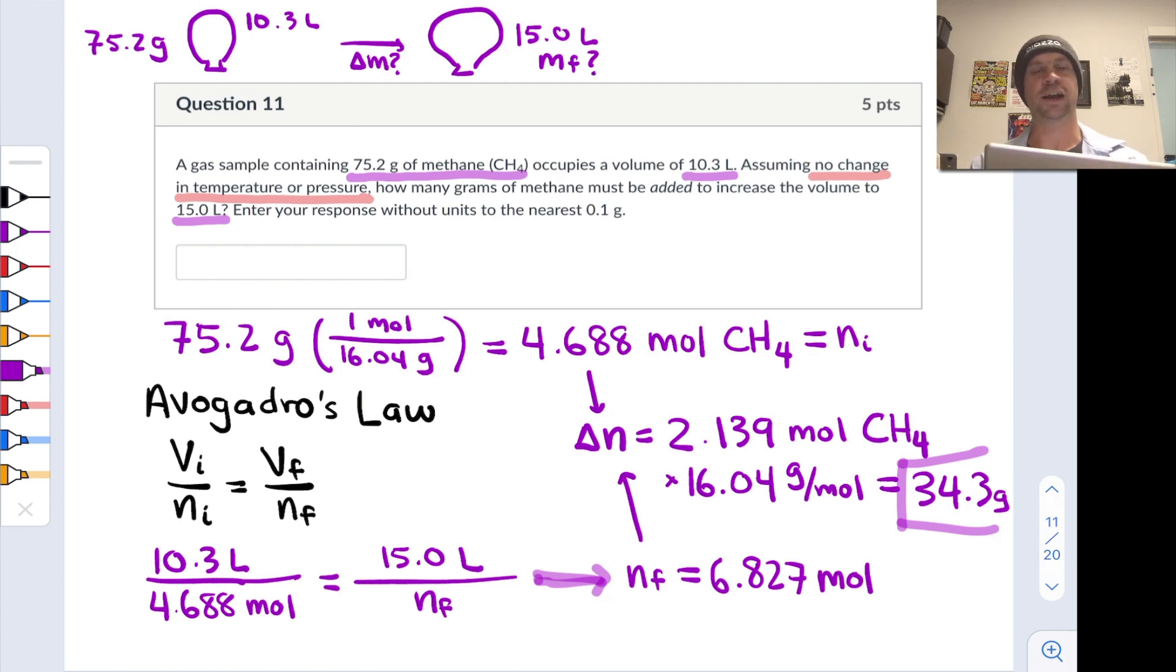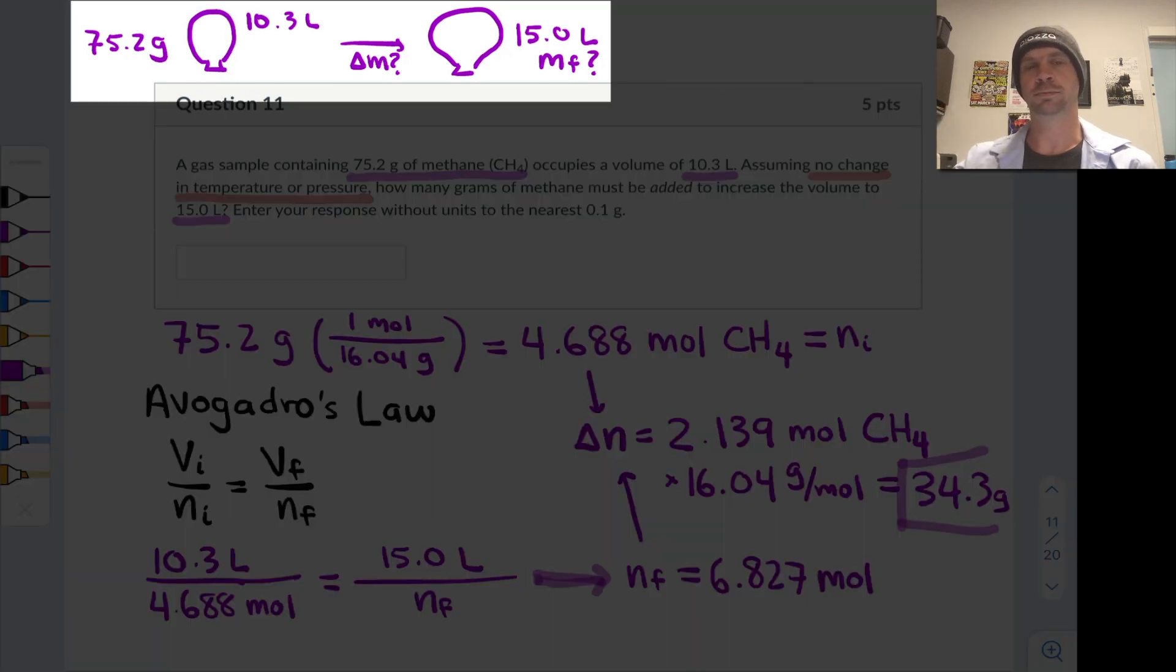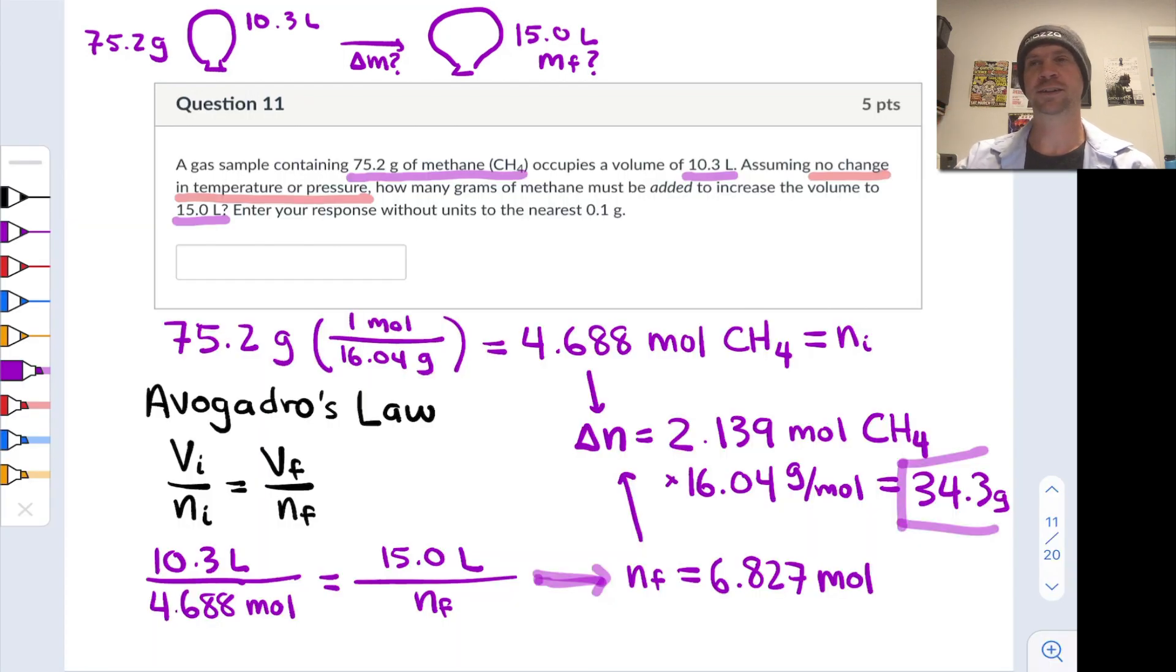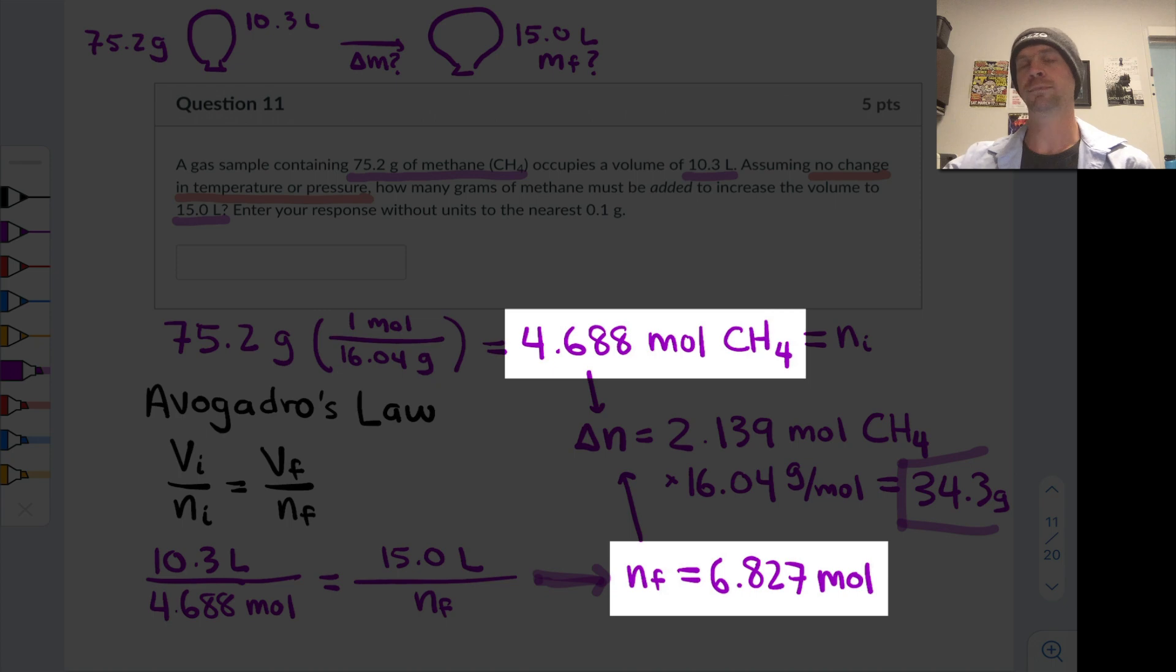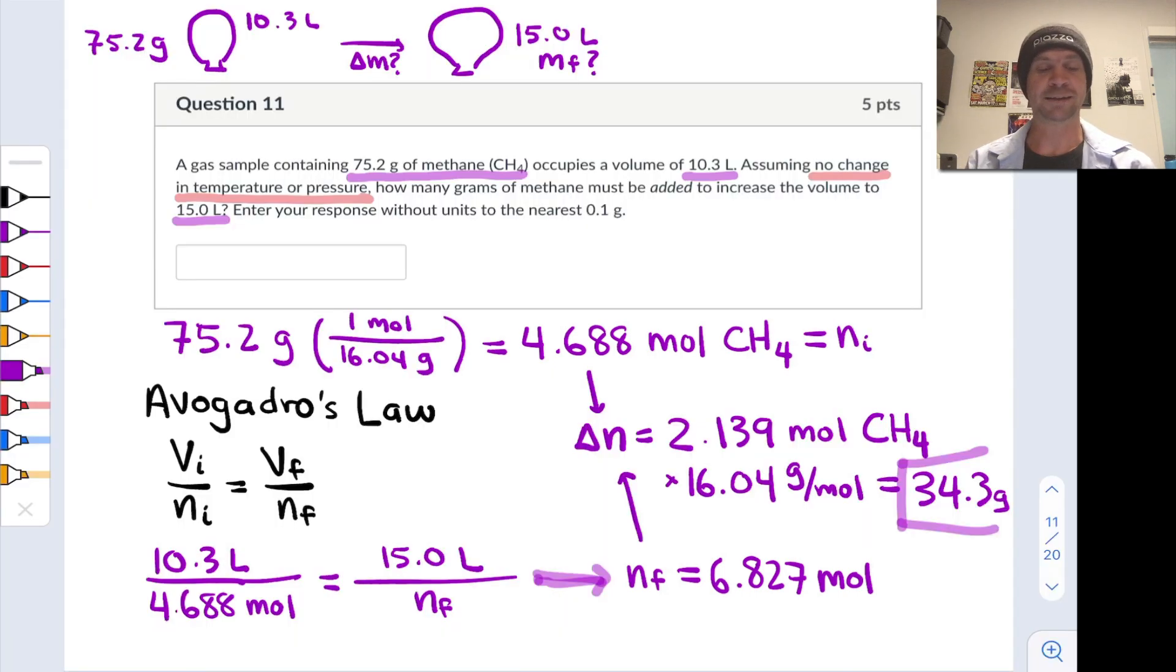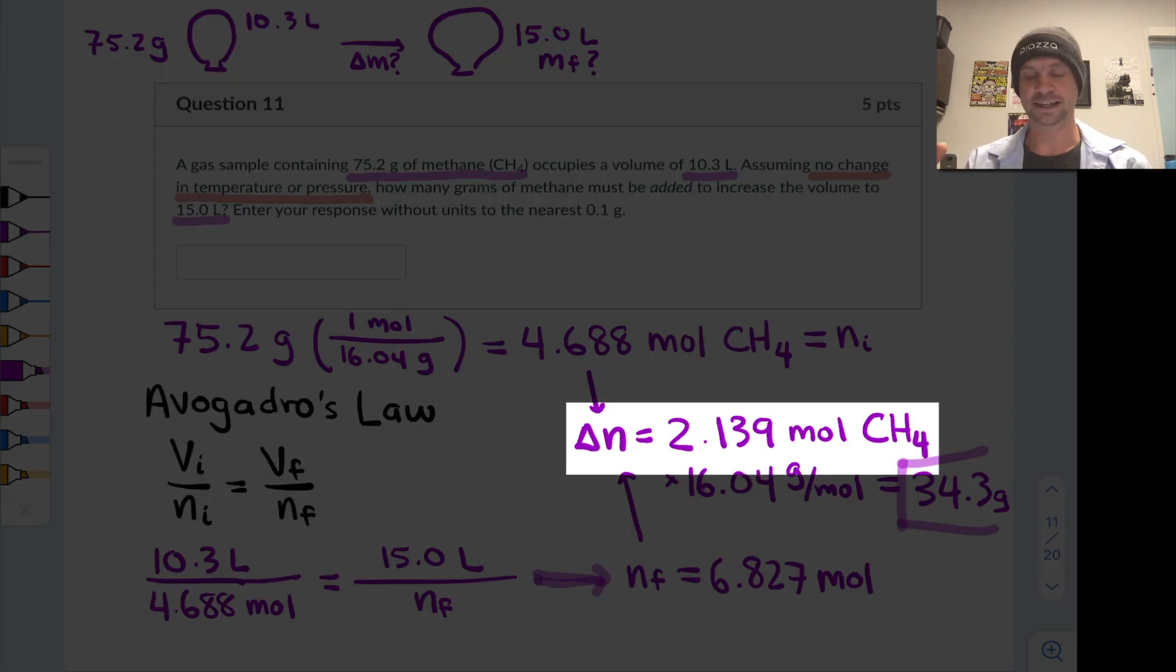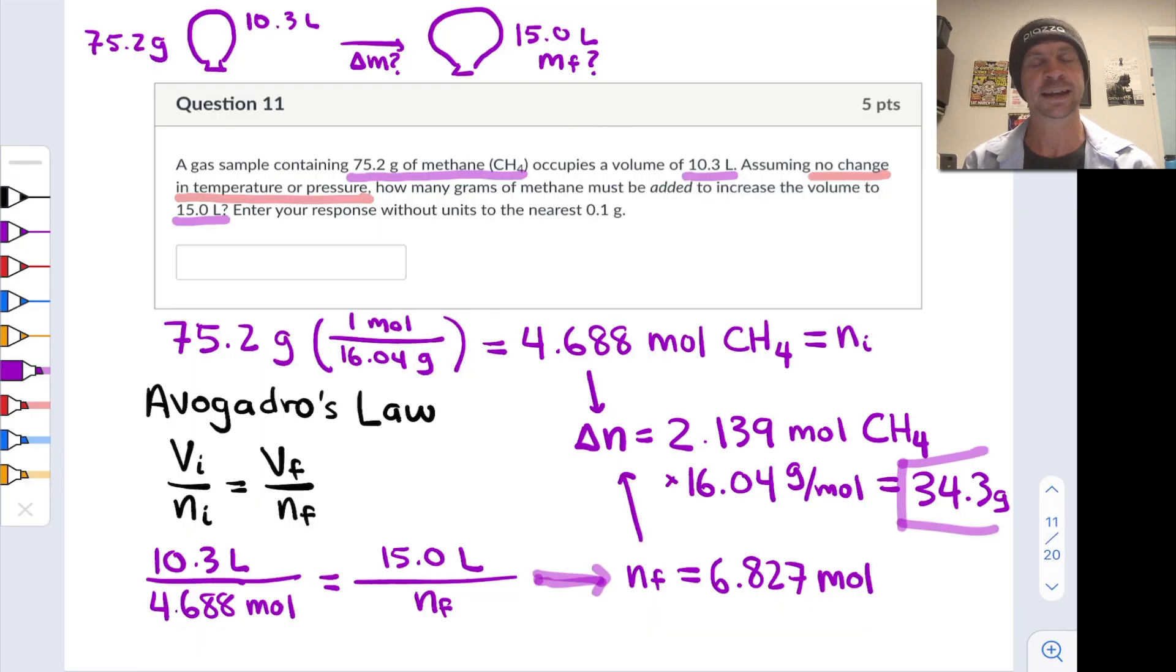As a sanity check, we can notice that we're increasing the volume by 1.5 times. To do that we need to make sure the final number of moles is 1.5 times the initial number of moles, and we do that by adding essentially half of the initial mass.